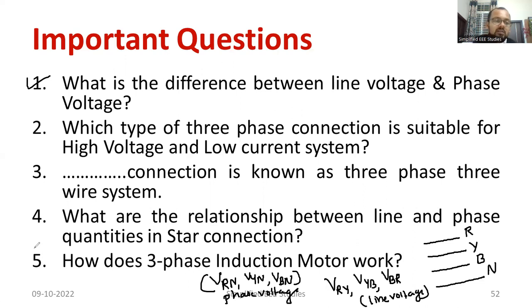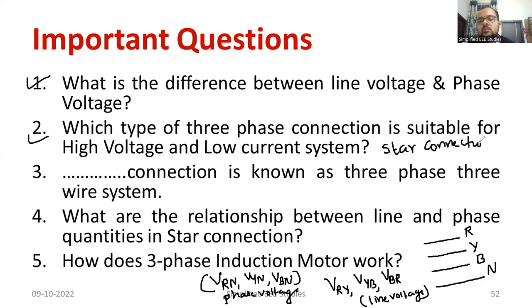Moving further, question number two: Which type of three-phase connection is suitable for high voltage and low current applications? The right answer is star connection. Another question: What type of connection is suitable for high current and low voltage applications? The right answer is delta connection. Three-phase connections are divided into two types — star connection and delta connection.